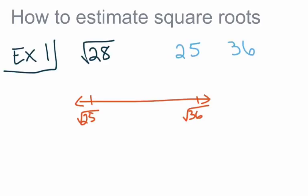If we're looking at the square root of 28, we have to ask ourselves: is it going to be very close to the square root of 25, kind of close to the square root of 25, pretty much exactly between 25 and 36, kind of close to 36, or very close to 36? In my opinion, the square root of 28 would be pretty close — kind of close to the square root of 25. So I'm going to put it on the number line right here, much closer to 25 than to 36.